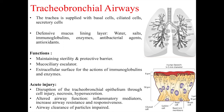Acute injury can involve disruption of the tracheobronchial epithelium through cell injury, necrosis, and hypersecretion of chemicals, leading to inflammation. This leads to altered airway function as well as further inflammatory mediator release, which further damages the tissue and increases airway resistance and responsiveness. Airway clearance of particles is also impaired as a result, making the airway even more susceptible to injury.